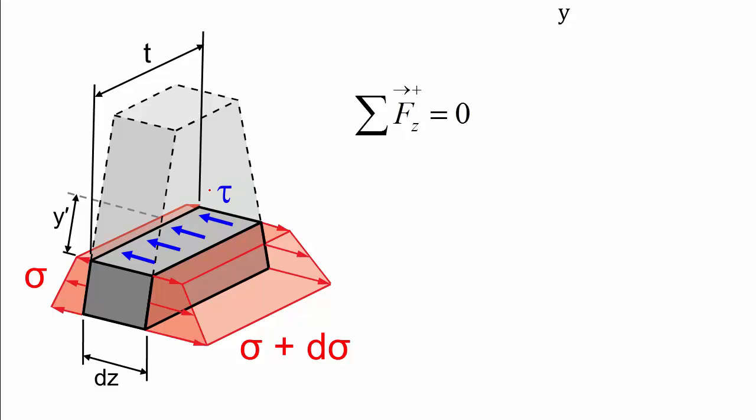First let's look at tau. So tau is uniform as per assumption on this face, and it acts upon this face that has a depth of dz and a width of t. So this becomes our resultant due to our shear stress distribution.